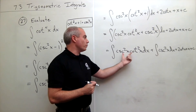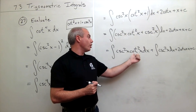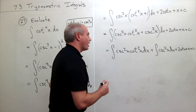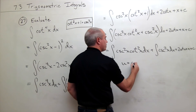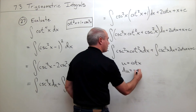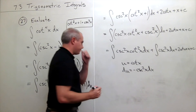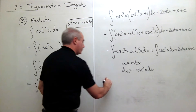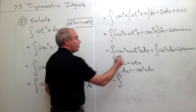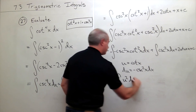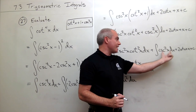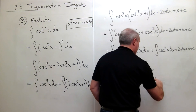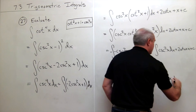This antiderivative — the integral of cosecant squared of x — I know. The other one is harder, but it's doable, because the derivative of cotangent of x is negative cosecant squared of x. So I can use a u-substitution. Let u equal cotangent of x; then du equals negative cosecant squared of x dx. Putting a negative inside means a negative outside, so I can rewrite that integral as negative integral of u squared du. Then negative cotangent x plus two cotangent x plus x plus c.